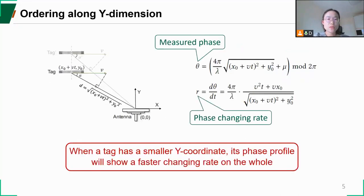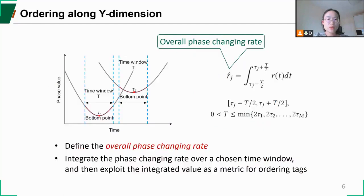Then to determine the order of tags along y-dimension, we find when a tag has a smaller y-coordinate, its phase profile will also show a faster changing rate on the whole. We propose to integrate the phase changing rate over a chosen time window and exploit the integrated value, which we also call the overall phase changing rate, as a metric for ordering tags.